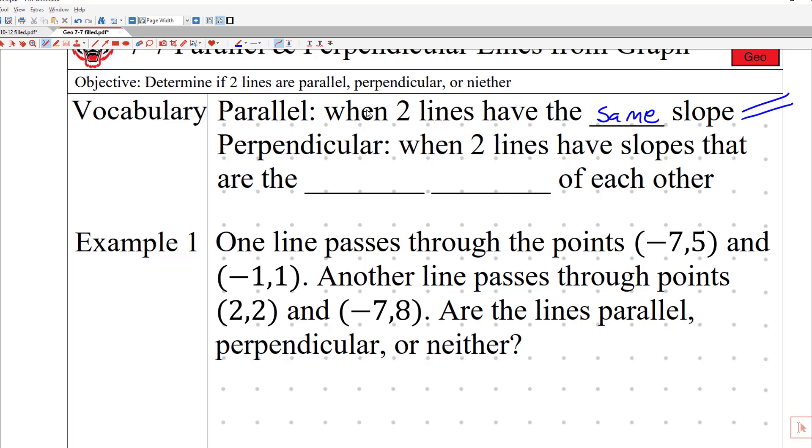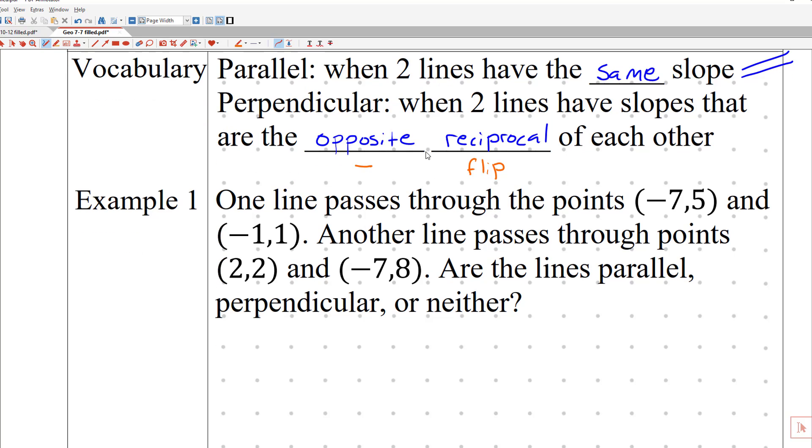And then perpendicular, when two lines have slopes that are the opposite reciprocal of each other. And those words are hard. Let me make them a little bit easier. Opposite just means negative and reciprocal means flip. So typically when I ask you what slopes do perpendicular lines have, you'll say a negative flip. Or if you want to try using some academic language, you'll be using the words opposite reciprocal.